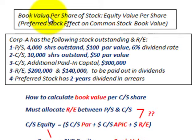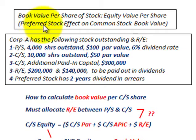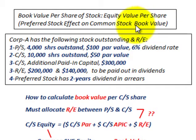What we're going to be going over here is the book value per share of stock — that's the equity value per share of stock. We're going to be looking at the effect that preferred stock is going to have on common stock's book value. For example, Corporation A has the following stock outstanding and retained earnings.